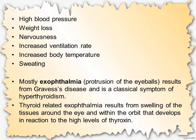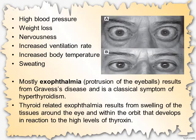Exophthalmos results from swelling of the tissues around the eye and within the orbit, developing in reaction to high levels of thyroxine. As you can observe in the diagram, in section A the muscles around the eye are swollen due to high levels of thyroxine in the blood, and the eyeballs protrude out from their orbit. In section B, the normal level of thyroxine shows no swelling in the tissues around the eyes and the eyeballs are normal.